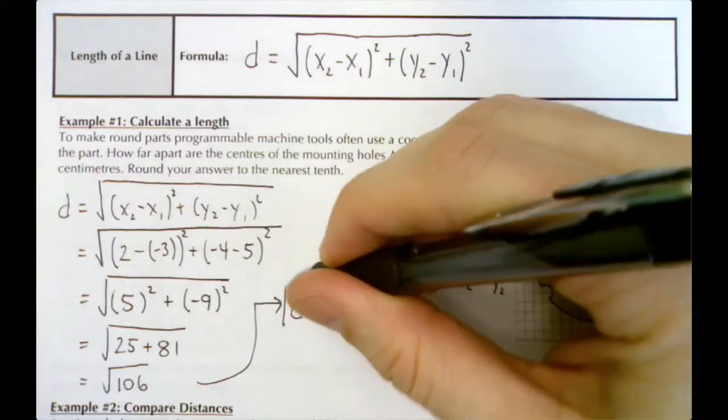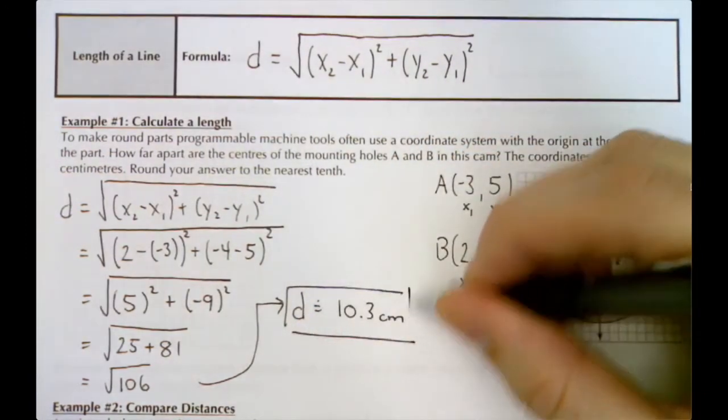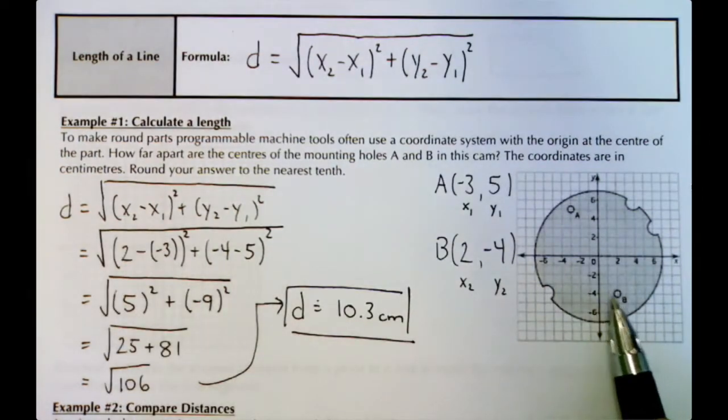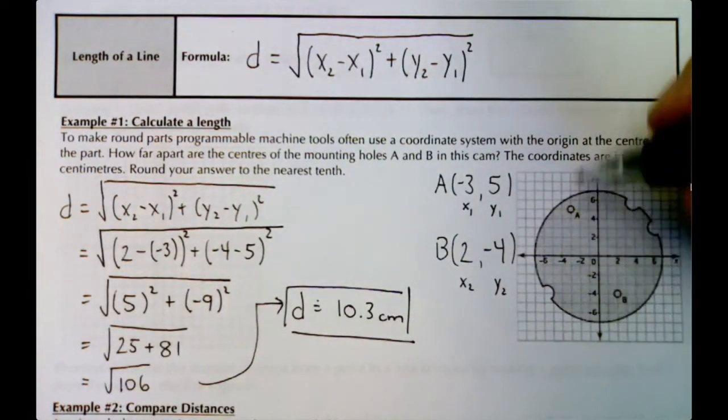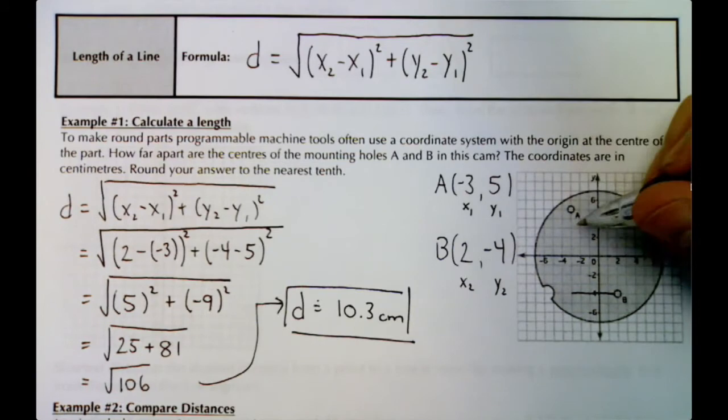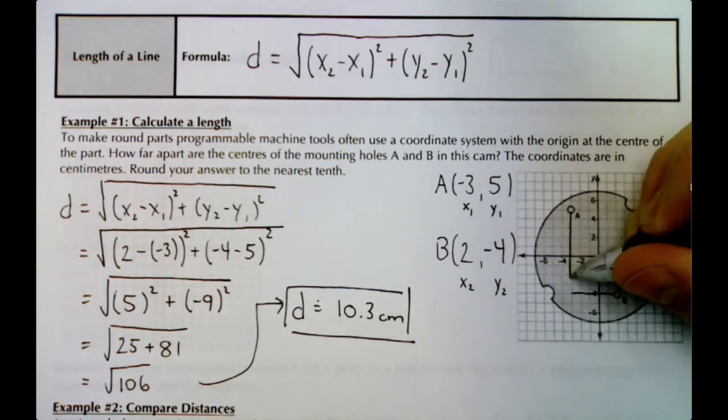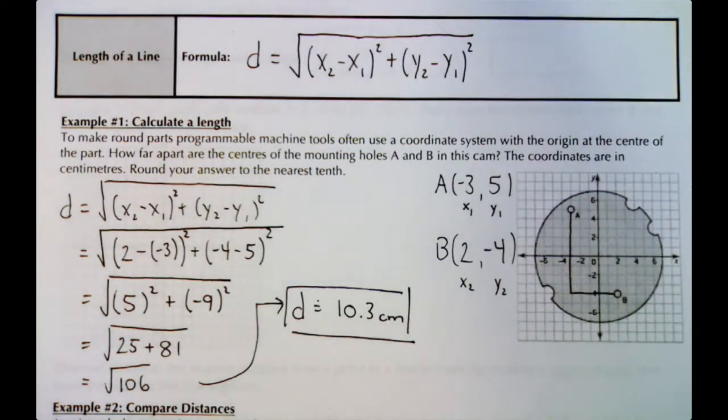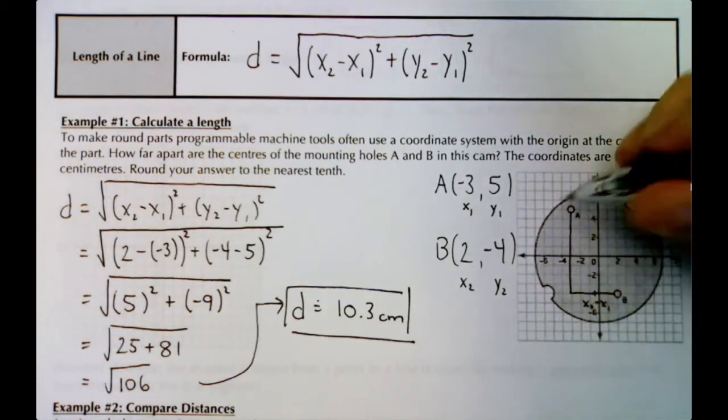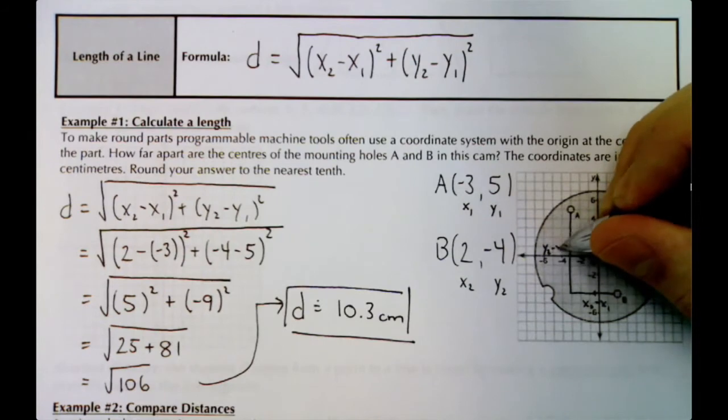I mentioned this comes from the Pythagorean theorem. x₂ - x₁ is just comparing the x value—that just represents the run. The y₂ - y₁ represents the rise. So we have the rise and the run here. This is your x₂ - x₁, this is your y₂ - y₁.